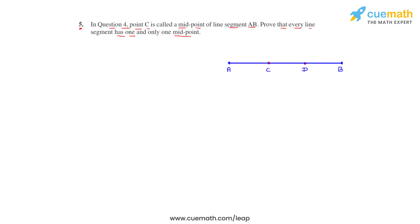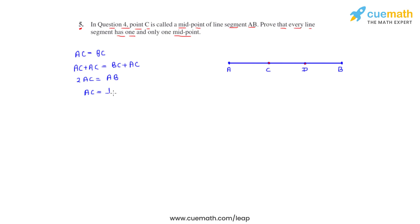Assuming C is the midpoint of AB, we write AC equals BC. Now adding AC on both sides we get AC plus AC equals BC plus AC. On addition, that gives us 2 times AC equals BC plus AC. From the figure, BC plus AC can be seen to equal AB. So we write 2 times AC equals AB, which gives us AC equals half of AB. Let's take this as Equation 1.